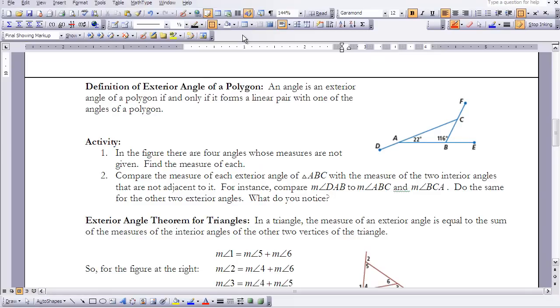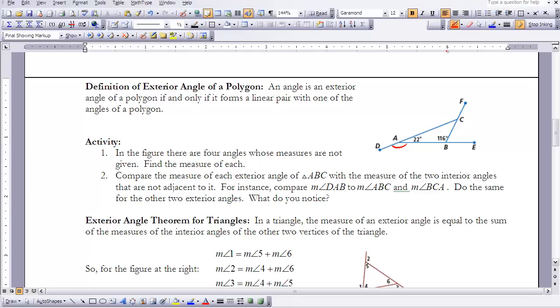The next concept is what is an exterior angle, and then there's an exterior angle theorem for triangles. The definition of an exterior angle of a polygon: an angle is an exterior angle of a polygon if and only if it forms a linear pair with one of the angles of a polygon. If you look at our triangle, we extend the side of the triangle, and I form a linear pair with angle BAC, so the exterior angle would be DAB. I extended side BC, and my exterior angle would be angle FCA. And if we extend AB, the exterior angle is CBE, which forms a linear pair with angle ABF.